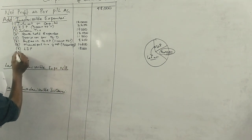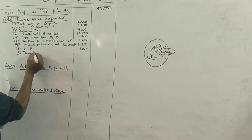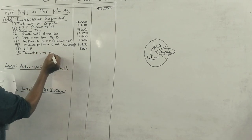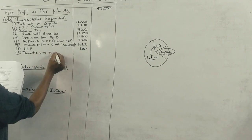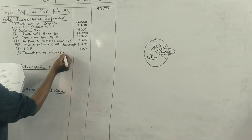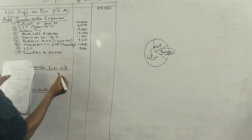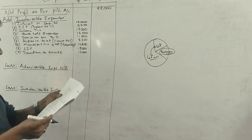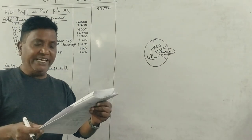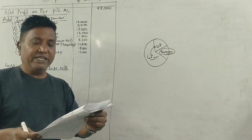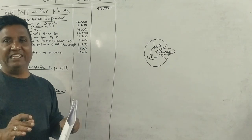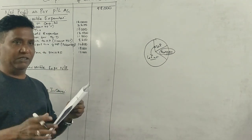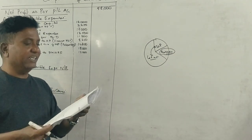Donations to the Prime Minister's National Relief Fund of Rs. 12,000 are inadmissible as a business expense. Depreciation is not an adjustment — it is completely a business expense and is fully admissible. Now we move to the credit side.